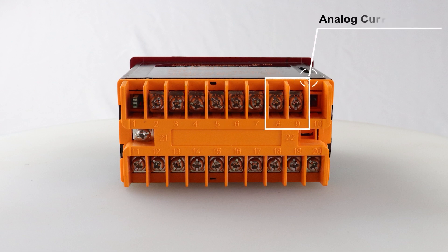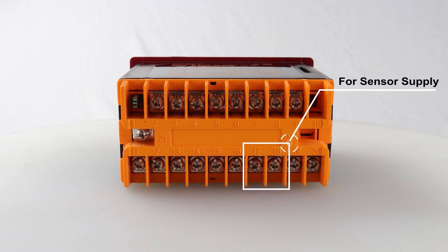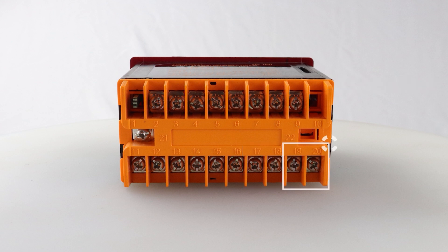Similarly, terminals 8 and 9 are for analog current output. Terminals 11, 12, and 13 are used for alarm 1. Similarly, terminal 14, 15, and 16 are used for alarm 2. Terminals 17 and 18 are for inbuilt sensor supply, plus 24 volt for providing power to transmitter. Terminals 19 and 20 are for auxiliary supply.